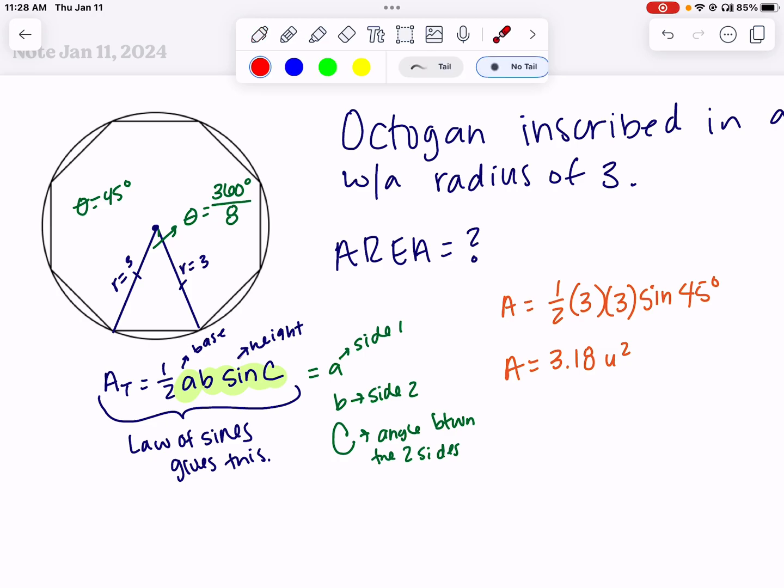Now this has given me the area of just this triangle. To find the area of the entire octagon, I need to multiply this by the number of triangles we can create. So the area of the octagon would be 8 times the number I just found, which gives me 25.46 units squared.